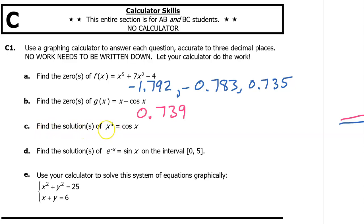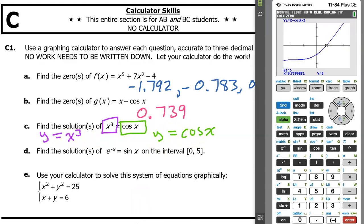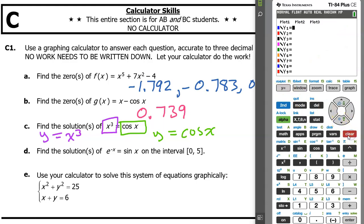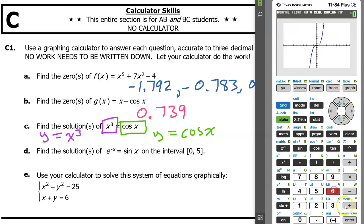Now let's find the solutions of x cubed equals cosine x. If you want to solve an equation, look at it as two separate equations: the left side as y equals x to the third power, and the right side as y equals cosine x. The solutions will be the intersection points between the two. Hit y equals, clear what's there. The first equation is x to the third power — type x using the caret, then arrow down to y2 and type in cosine x. Hit zoom 6 to get an initial look.